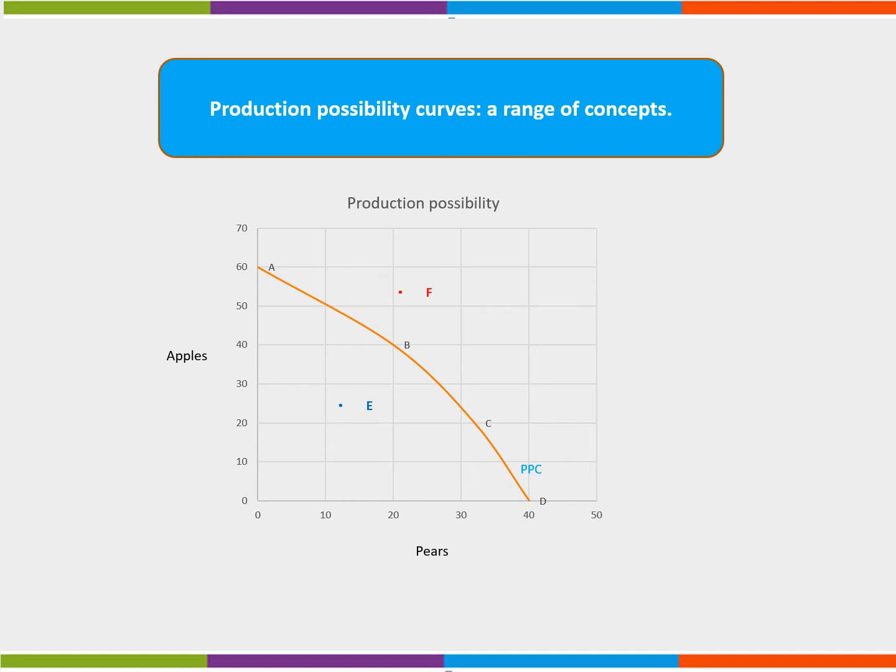Here, by giving up 60 units of apples, the firm gains 40 units of pears. The opportunity cost of the 40 units of pears is the 60 units of apples that it has foregone. There is therefore a choice between two competing resources.